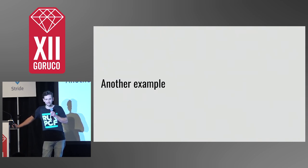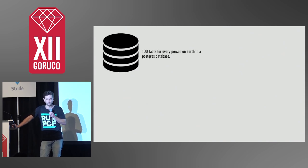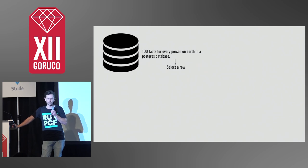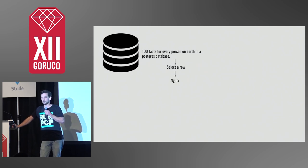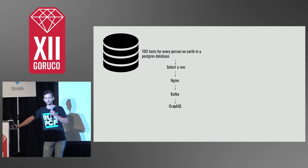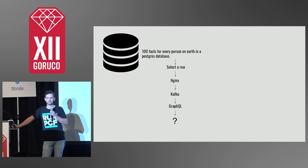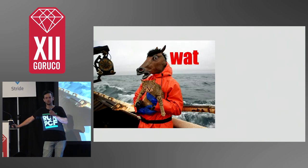This is what we in the meaning creation industry call embarrassingly meaningful. Now let's re-implement this dating app a slightly different way. We'll start with the same dataset, but this time we'll specify that we're storing it in a Postgres database. Then we'll select a row using SQL, send the data over an NGINX proxy, stick it on a Kafka queue, and query it with GraphQL. This is what we in the meaning creation industry call a blind date.